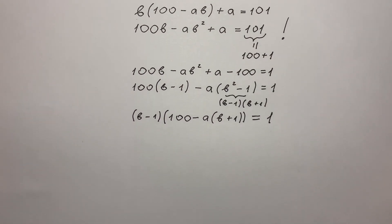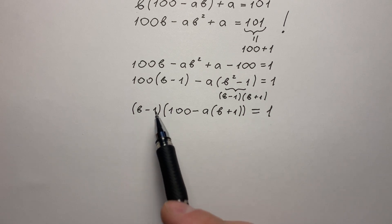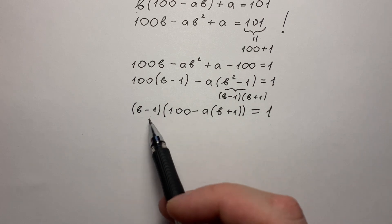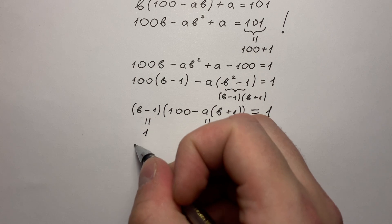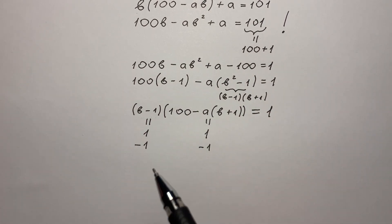And we can really see that this equation on the left side is a product of two whole numbers and their product equals 1. This means that each of these numbers can be 1 or minus 1. So from this moment we have two different cases.